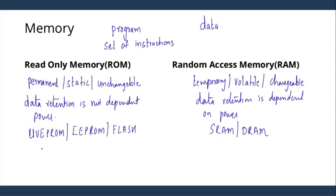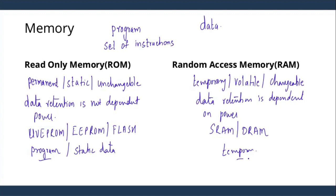Read-only memory is generally used to store your programs, which generally never change, or some static data — for example, static signboards that do not change much as we move on the road. RAM is where temporary kind of data is stored. There is no strict distinction called 'program memory' versus 'data memory' — read-only memory can be used for storing both program and data, while RAM can also be used for storing dynamic sets of instructions in the case of microprocessors or simple temporary data.